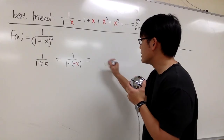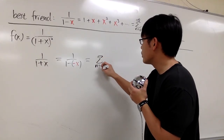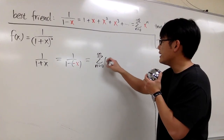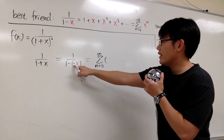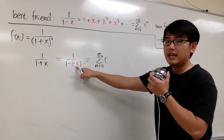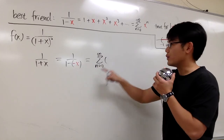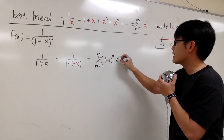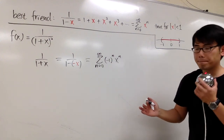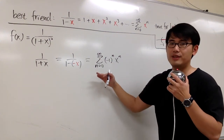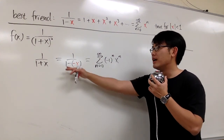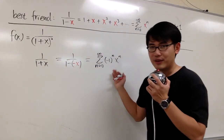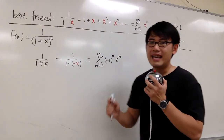This is the same as sigma when n goes from 0 to infinity. Because we have negative x, which is negative 1 times x, we write this as negative 1 to the nth power times x to the nth power. I did another video with a more detailed explanation of this, so you can check that out. But we need to use this first, and then differentiate.